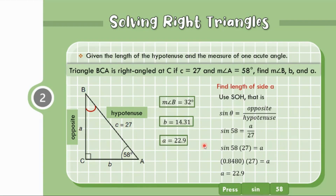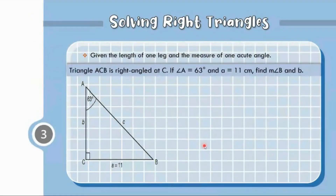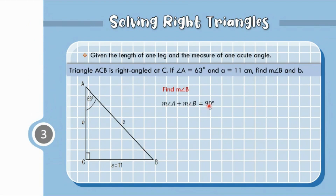For the third given: given the length of one leg and the measure of one acute angle. Consider triangle ABC right-angled at C. If measure of angle A equals 63 degrees and the length of side A equals 11, find the measure of angle B and the length of side B. Since measure of angle A plus measure of angle B equals 90 degrees, substituting 63 degrees: measure of angle B equals 90 minus 63 equals 27 degrees.